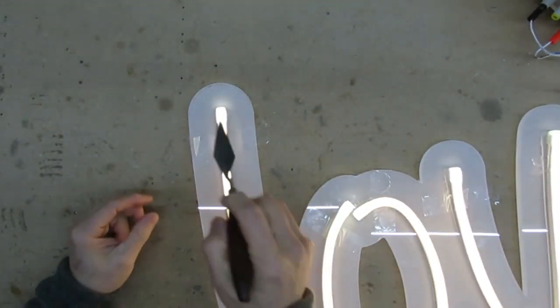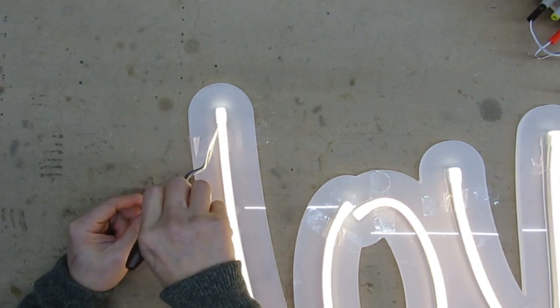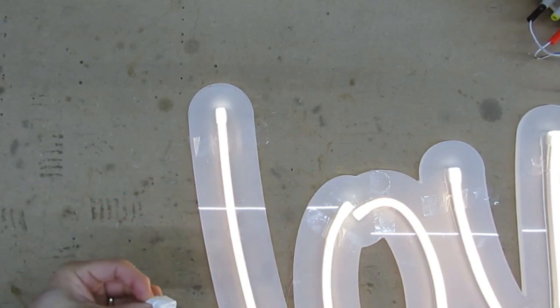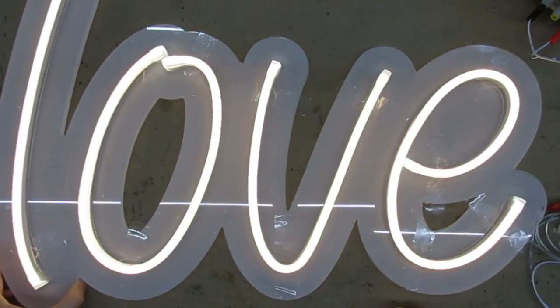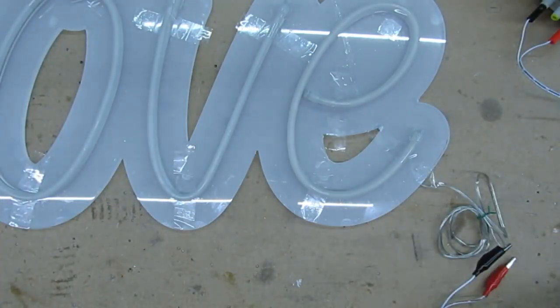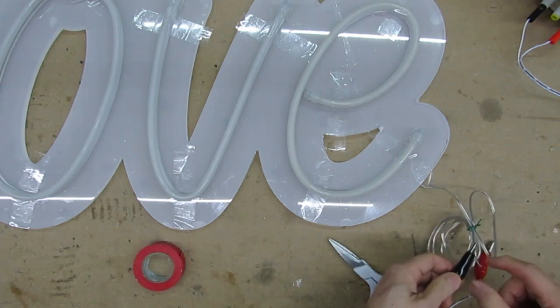I'm just tidying up the silicone around the end caps and checking to make sure there are no gaps. Now I put a red tape on the positive cable so the sign fitter can identify it easily.